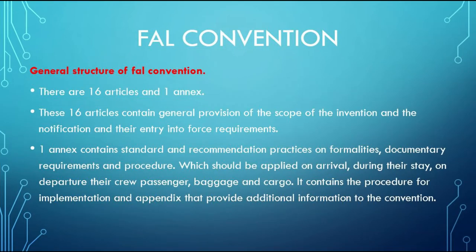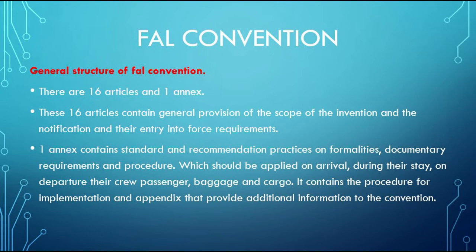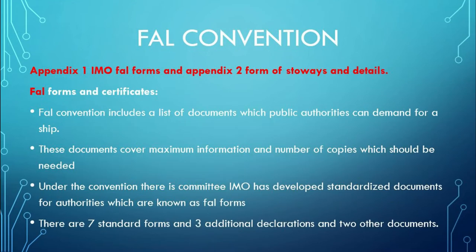General structure of FAL Convention: there are 16 articles and one annex. These 16 articles contain general provisions on the scope of the convention, notification, and their entry into force requirements. The one annex contains standards and recommended practices on formalities, documentary requirements, and procedures which should be applied on arrival, during stay, and on departure for crew, passengers, baggage and cargo. It also contains procedures for implementation and an appendix providing additional information. Appendix 1 covers IMO FAL forms, and Appendix 2 covers forms for stowaways and details.